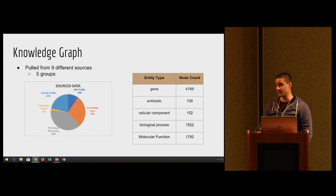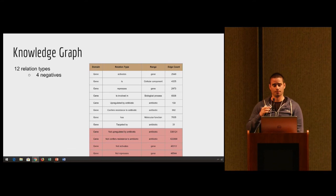Our knowledge graph is currently composed of nine different sources that are categorized into five groups: MIC profiles, growth profiles, expression profiles, metaphenotype microarrays, and other existing knowledge bases. Our entity types are genes, antibiotics, cellular components, biological processes, and molecular functions.